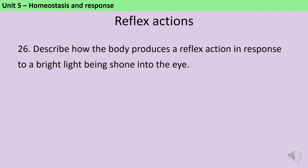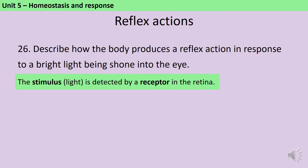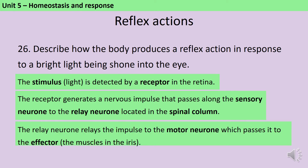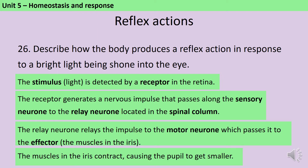You could be asked to describe any reflex reaction but the overall pattern is the same — you just need to change the names of things like the stimulus and where the receptor cells are. The stimulus, in this instance light, is detected by a receptor in the retina of the eye. The receptor generates an electrical impulse which passes along the sensory neuron to the relay neuron in the spinal column. The relay neuron passes it to the motor neuron, which passes it to the effector — the muscles in the iris. Those muscles contract, causing the pupil to get smaller so that less light gets in and your eye is not damaged.